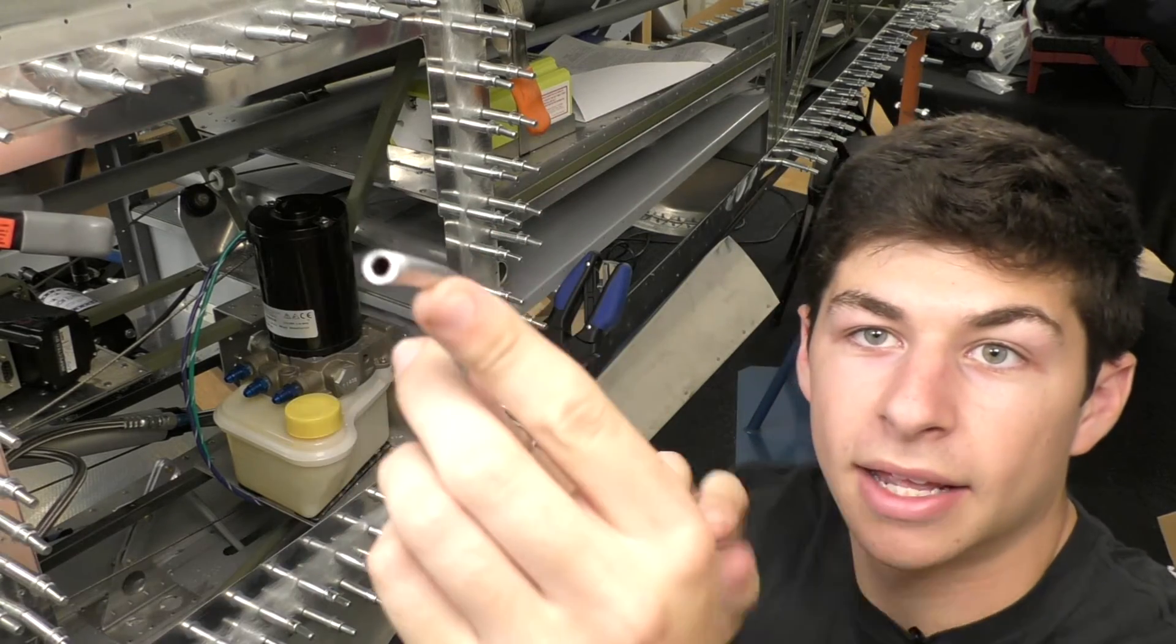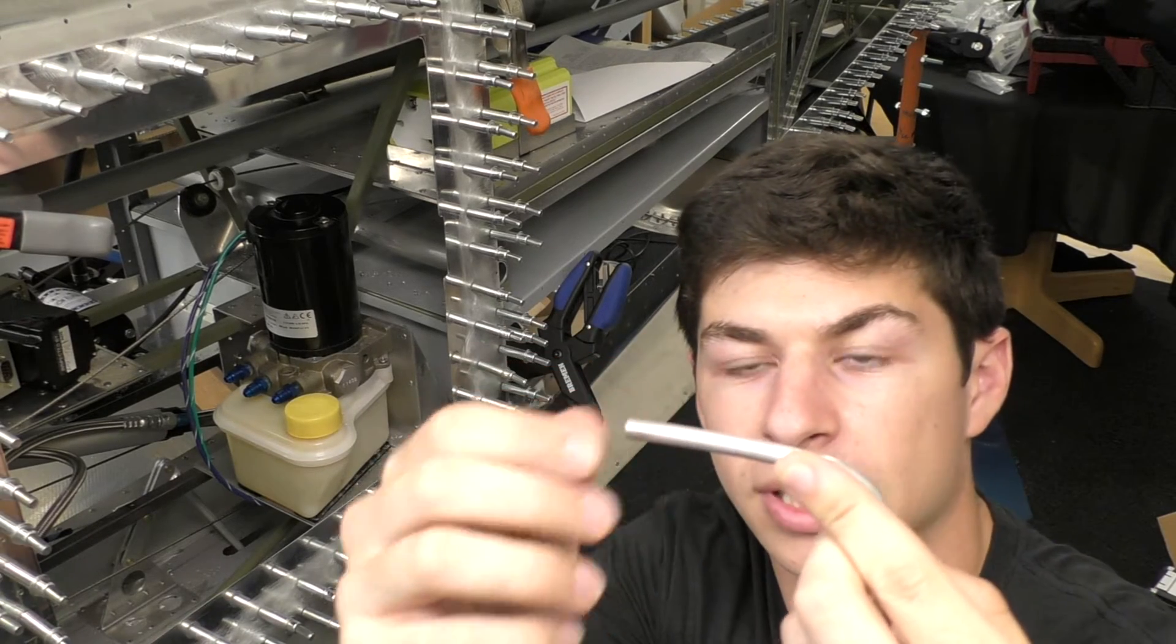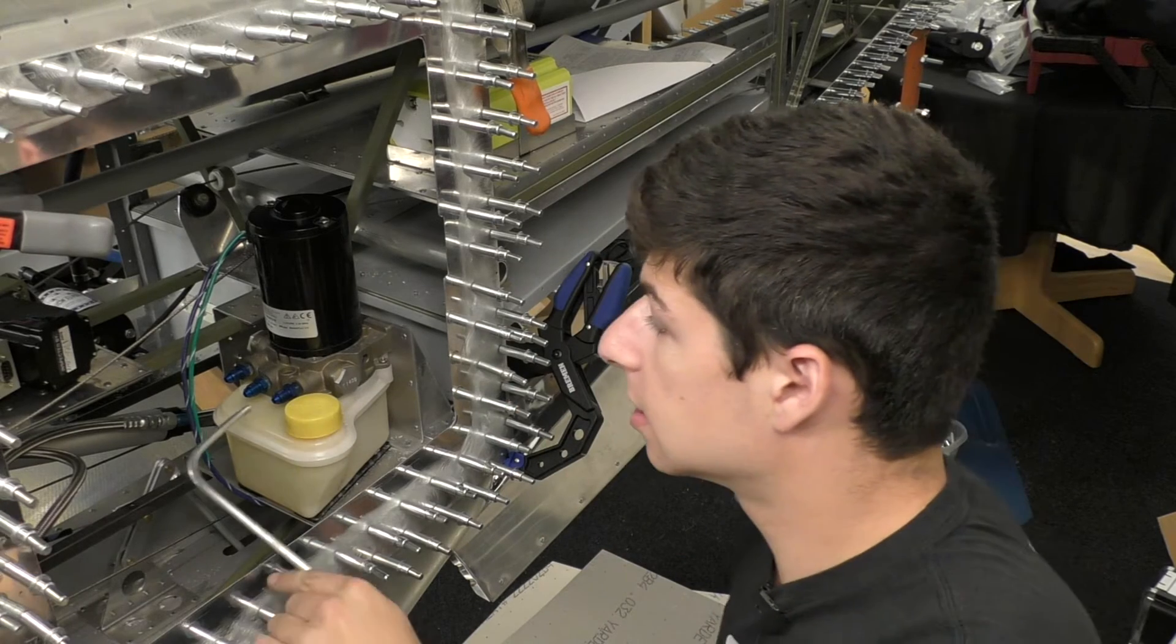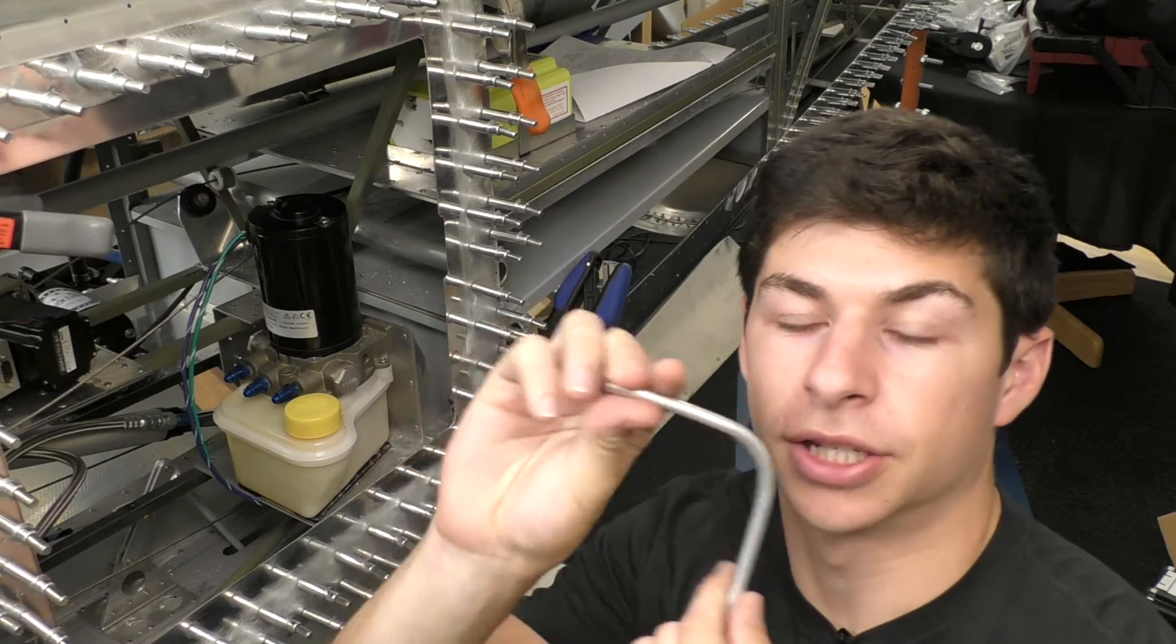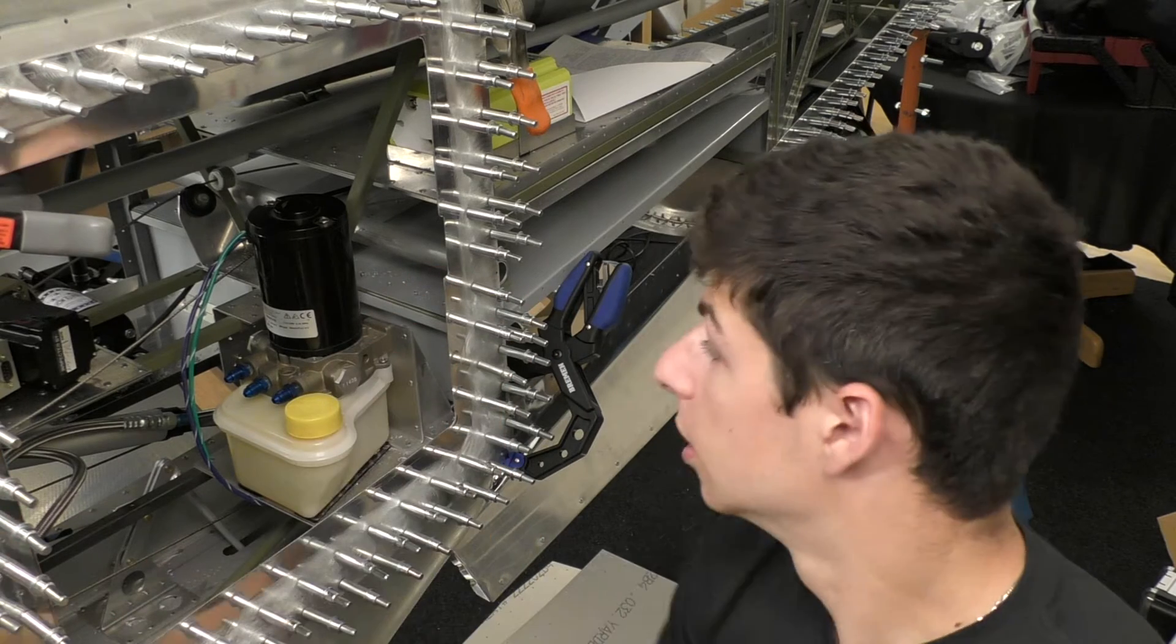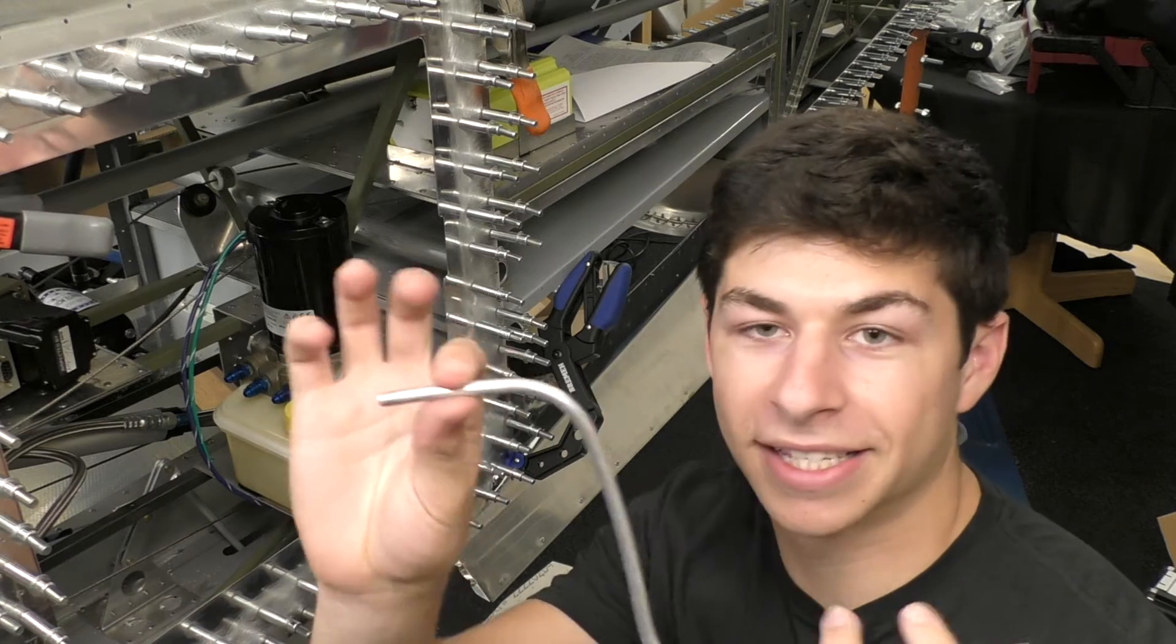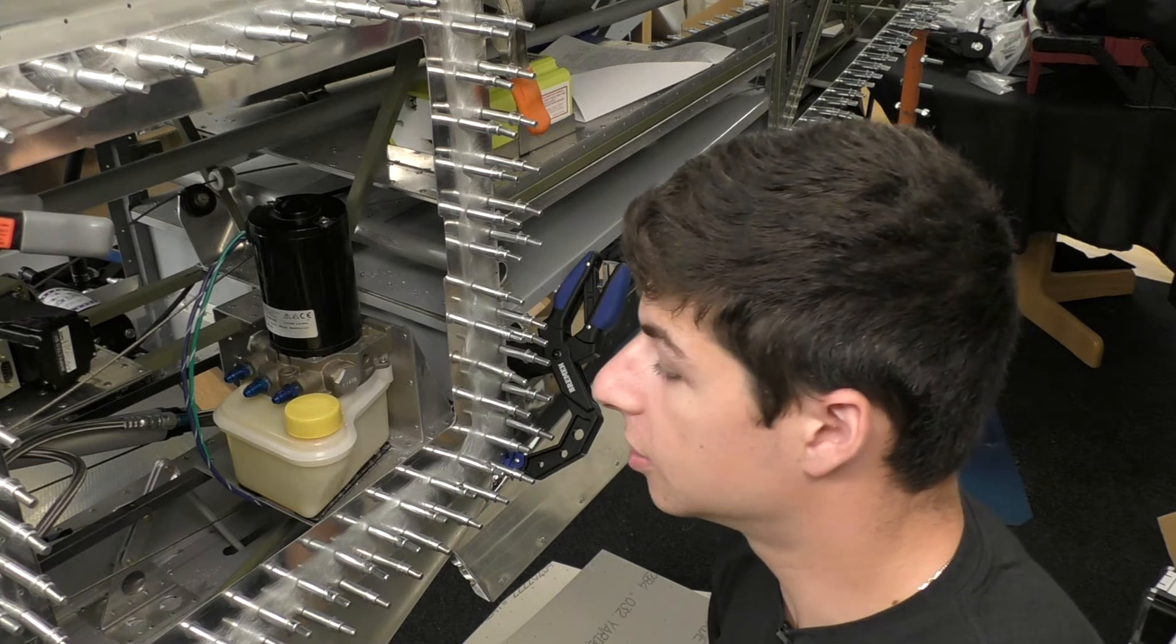Then we went ahead, and we actually already did this, filed the end, deburred it just slightly, and then just used some Scotch-Brite for the outside. So now it is ready to flare it. What flaring does is we're able to fit it to the fitting, and then a nut goes over it and securely tightens the tube to the fitting. We're going to go ahead and flare both sides. We're going to remember to put the inside fittings over the tube before we do this, and then we'll go ahead and do that for all three lines.